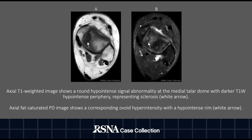On the axial T1-weighted image on the left, there is a round hypo-intense signal abnormality at the medial talar dome with a darker T1-weighted hypo-intense periphery representing sclerosis. On the axial fat-saturated PD image on the right, there is a corresponding ovoid hyperintensity with a hypo-intense rim.